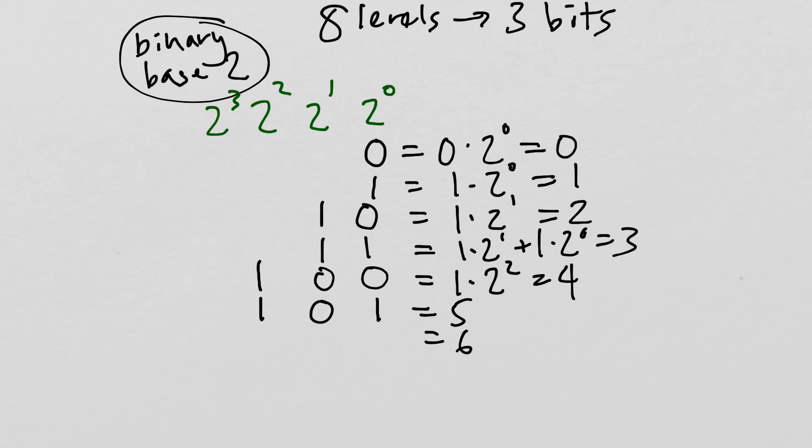And to get 6, I could do this, 1 in the 2 to the 2nd slot, and then 1 in the 2 to the 1st slot, and a 0 here in the 2 to the 0th slot. And 7, finally, 7 I get by having 1s in each of the slots for 2 to the 2nd, 2 to the 1st, and the 2 to the 0th.